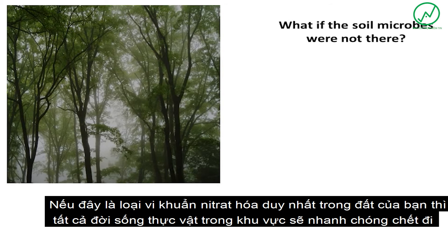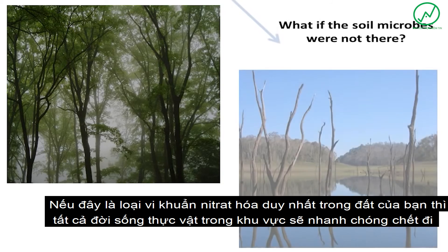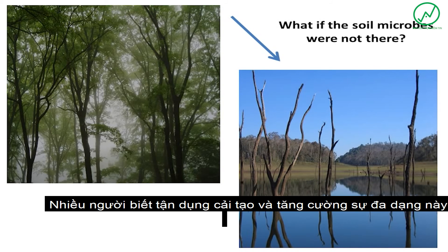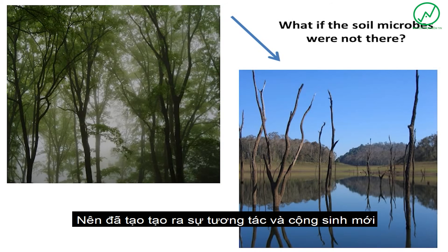Without a vast array of different organisms, all of one type of nitrifying fungi may die after a cold summer's evening. If this were to be the only type of nitrifying microbe in your soil, then all of the plant life in the area would quickly die.